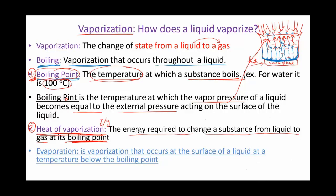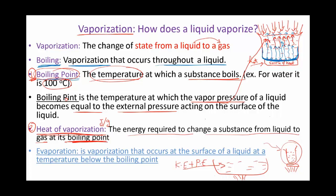The heat of vaporization is the energy required to change a substance from liquid to a gas, but it must happen at the boiling point. It's measured in joules per gram, and it depends on the amount of substance. If you have a small vessel with a little water and a big vessel full of water on the stove, the bigger one will take more time because it needs more thermal energy to increase kinetic energy and overcome the forces between the particles.